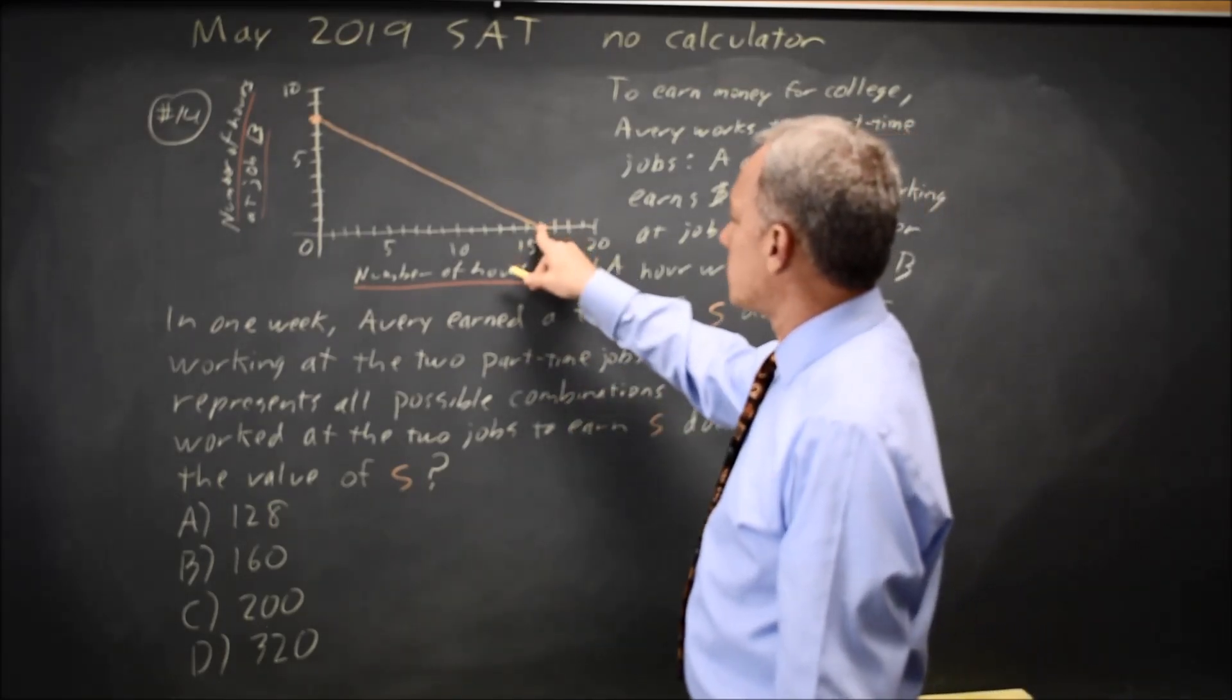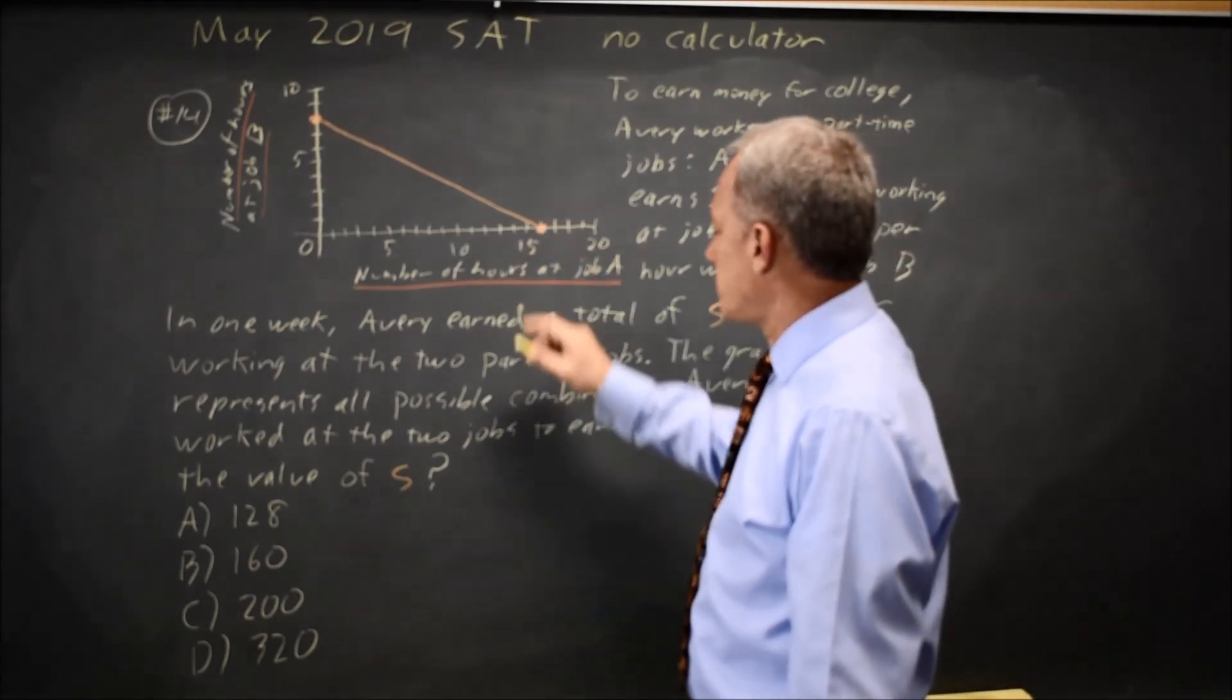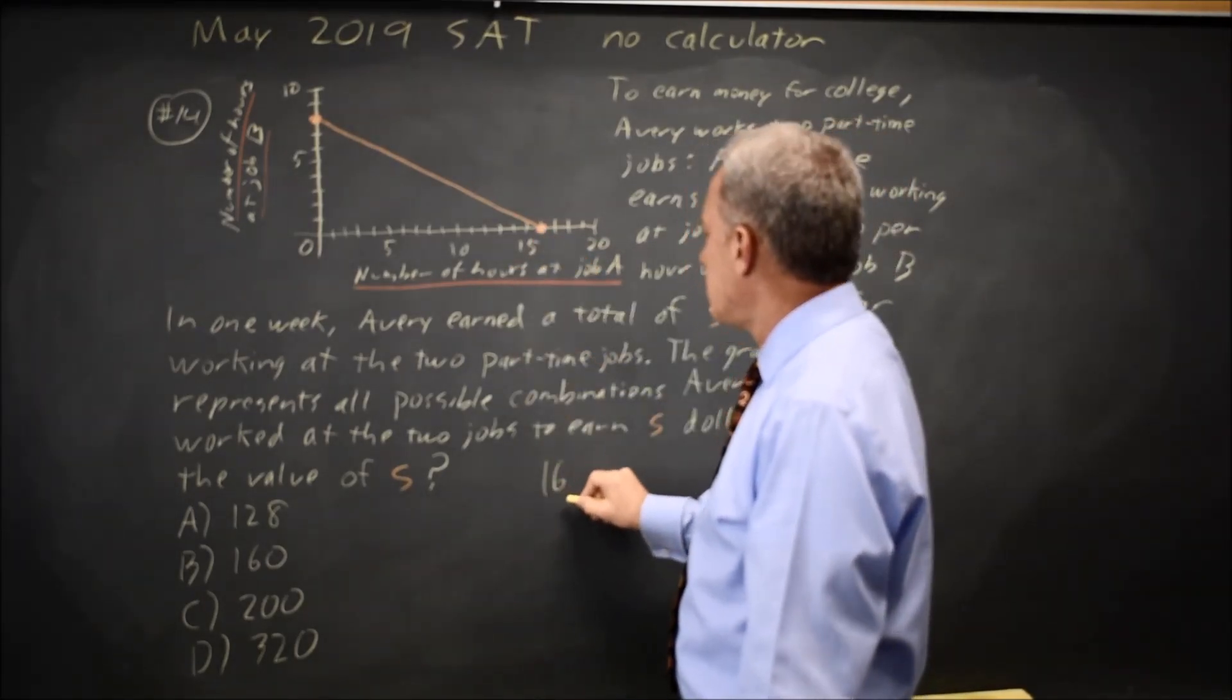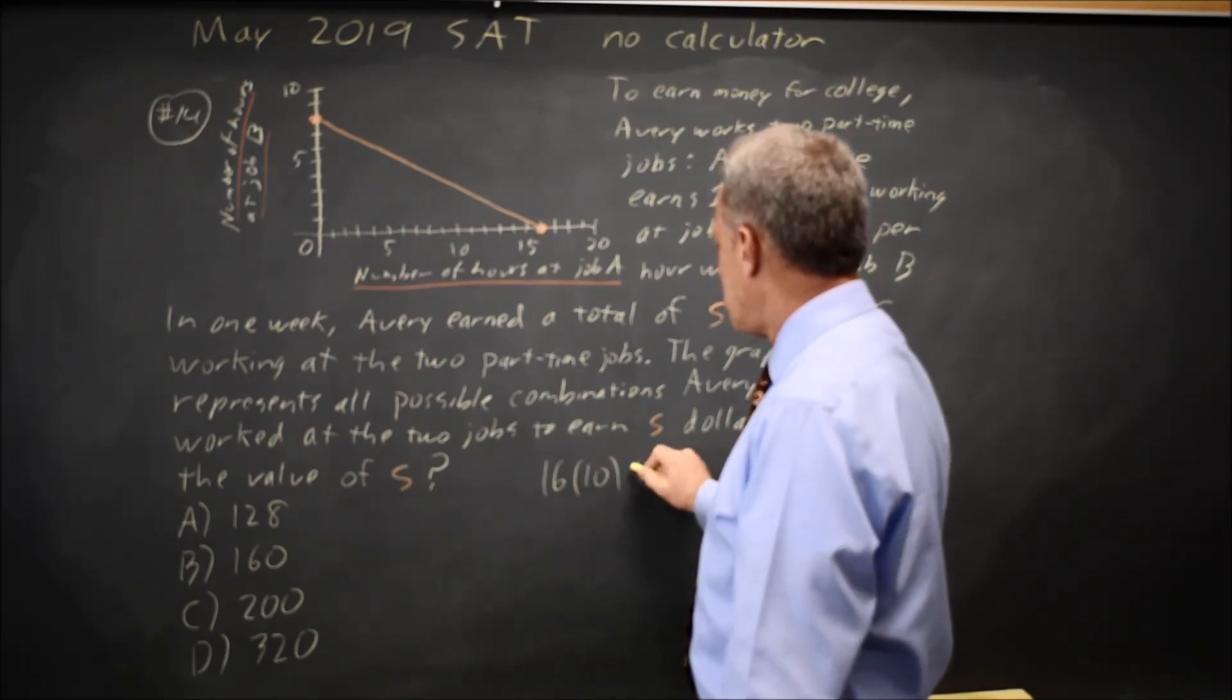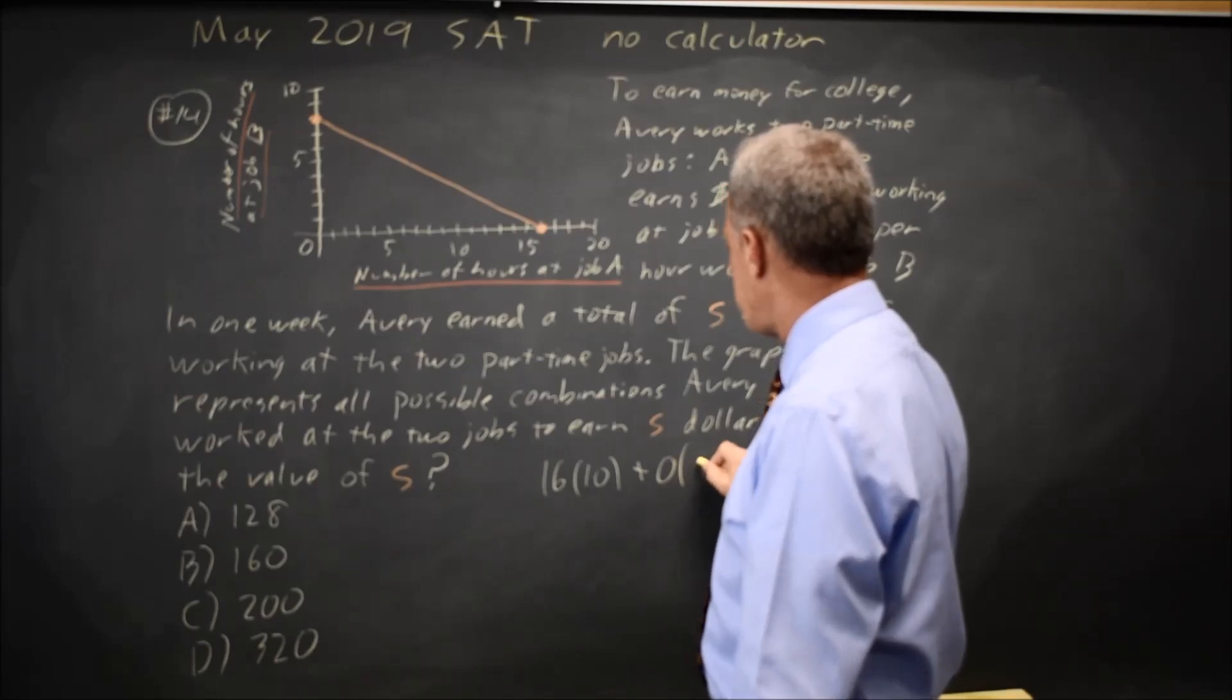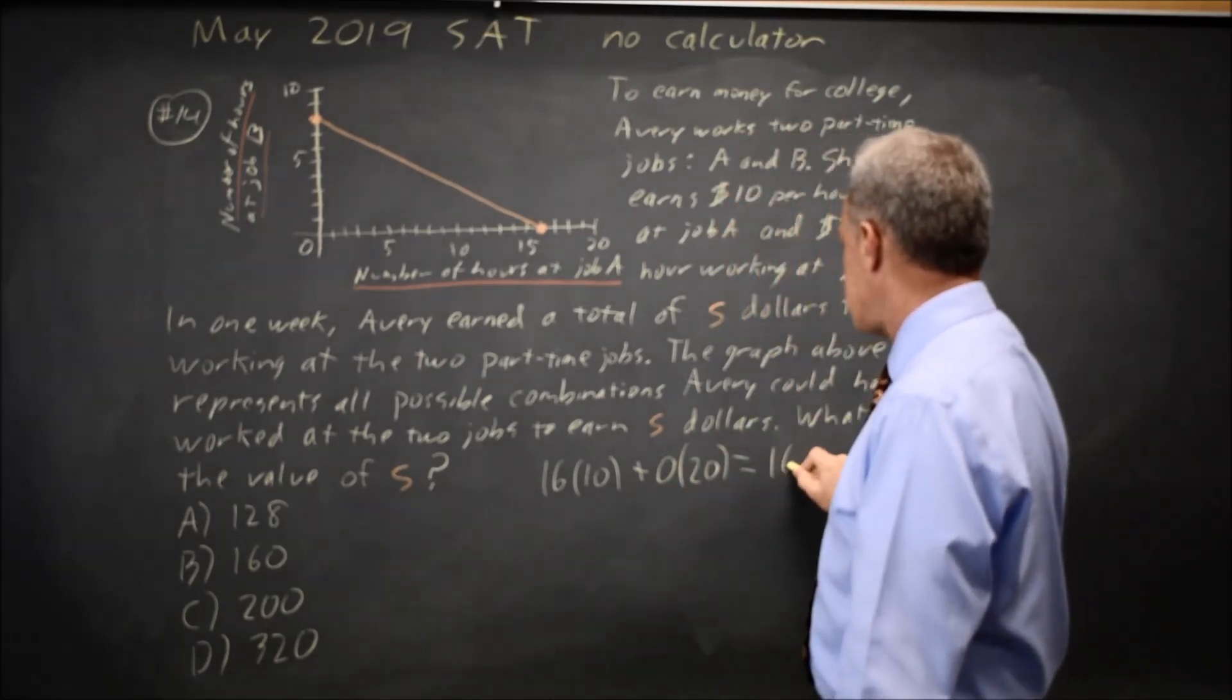So if we're at this point—16 hours at job A and zero at job B—that'd be 16 times your pay for job A, which is 10, plus zero times your pay for job B, which is 20. So that's 160 plus zero, which is 160.